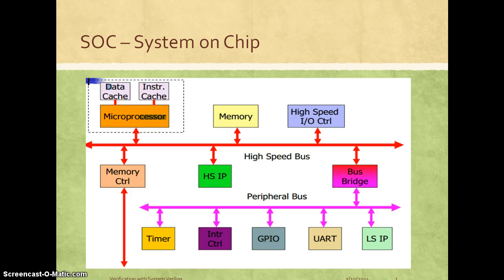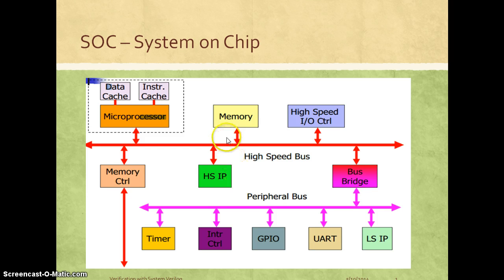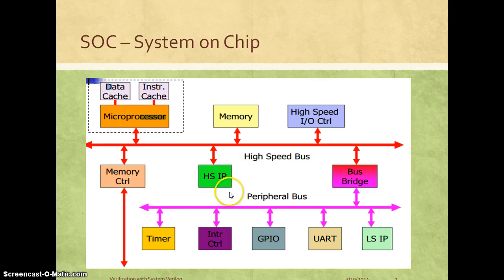However, with current trends in silicon design which allow you to integrate more and more logic onto a single chip, it is now feasible to build a system that has all these components on a single chip. That is how these kinds of designs are now known as system on chip designs. In a system on chip design like this, each of the individual components are designed as individual IPs, and these IPs are connected using certain standard interface interconnect protocols to build a full processor-based system on a single chip.